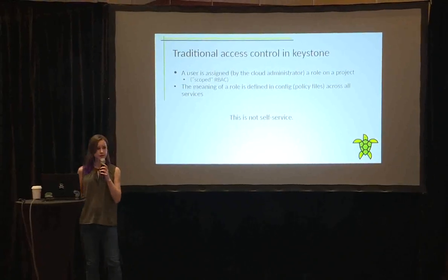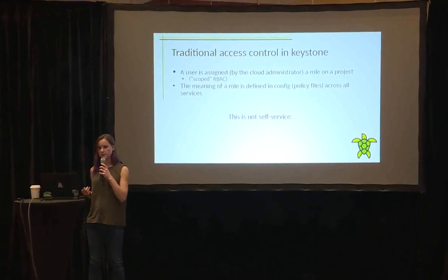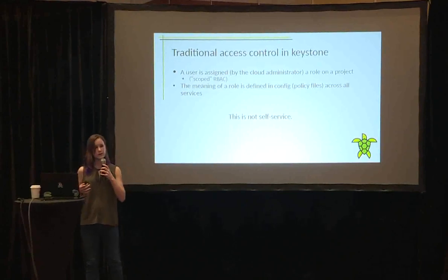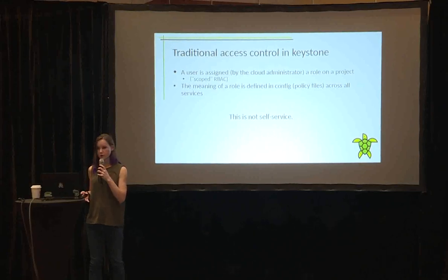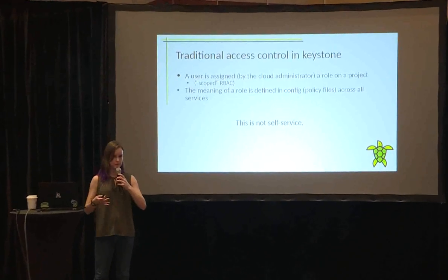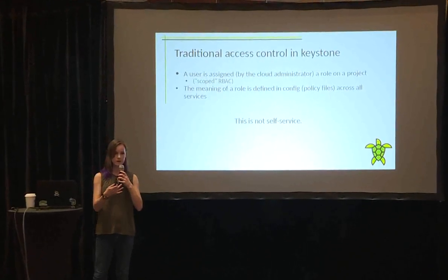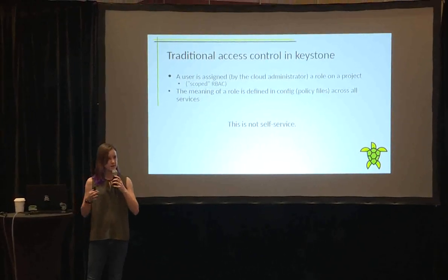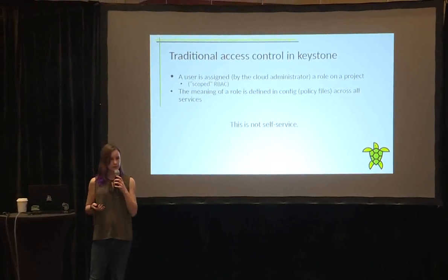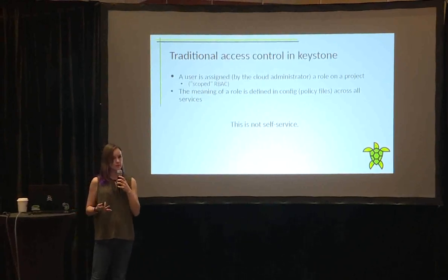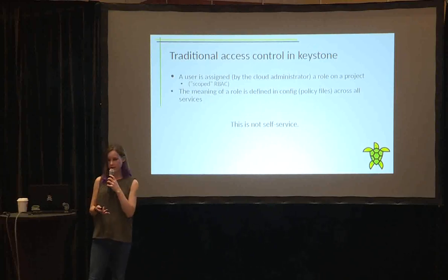To explain why we needed this feature in Keystone, I first want to discuss a little bit about the traditional way we have of doing access control in Keystone. We use a kind of role-based access control where users are assigned a role, but they're also assigned a target where that role applies. So we say, for example, the user has the member role on Project Foo. We call this scoped RBAC — it's a unique way of doing authorization in Keystone. And the only way for a user to get a role assignment is to go ask their cloud administrator to make that role assignment for them.